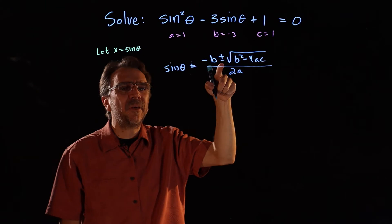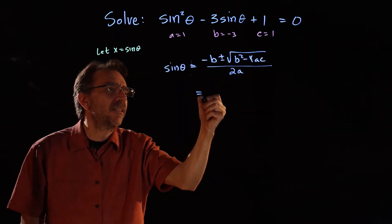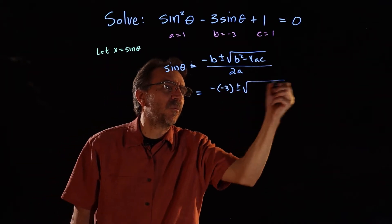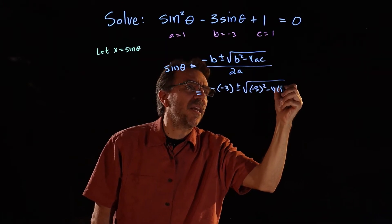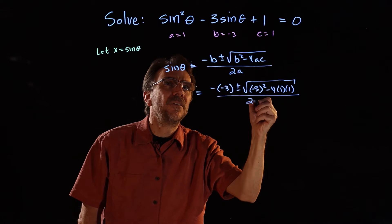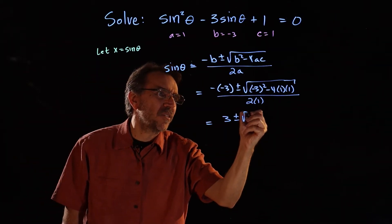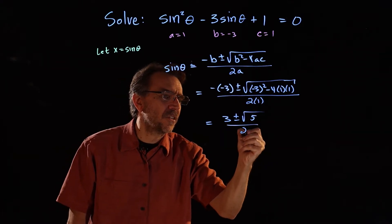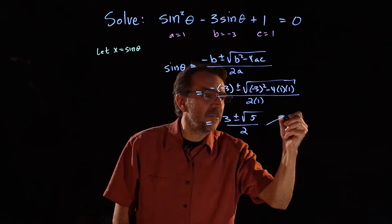So sine theta equals negative b plus or minus square root of b squared minus 4ac, all over 2a. Now let's substitute: we have negative negative 3, plus or minus the square root of negative 3 squared minus 4 times a times c, all over 2a. That gives us 3 plus or minus square root of 9 minus 4, which is 5, all over 2.